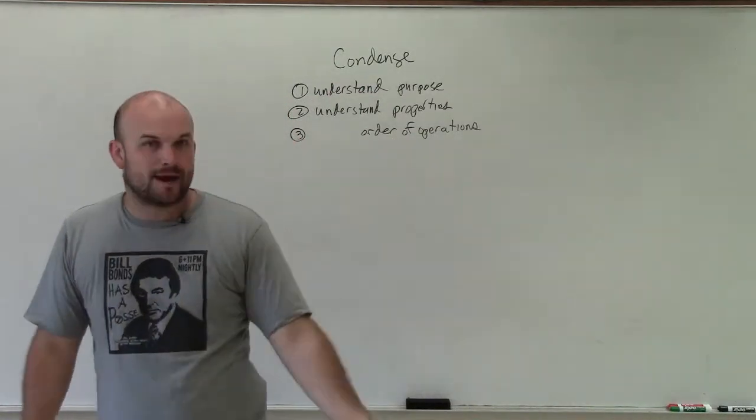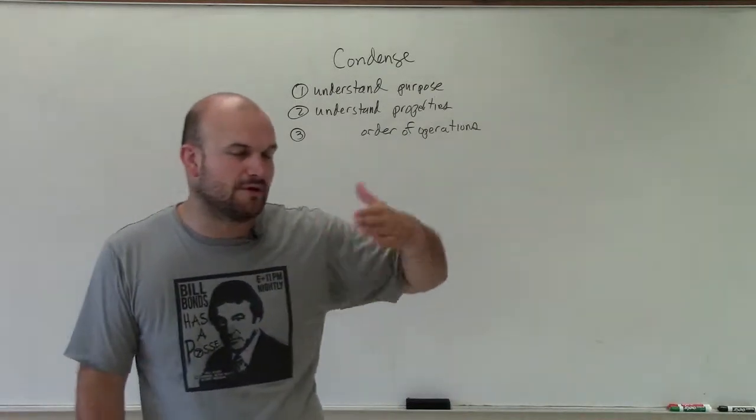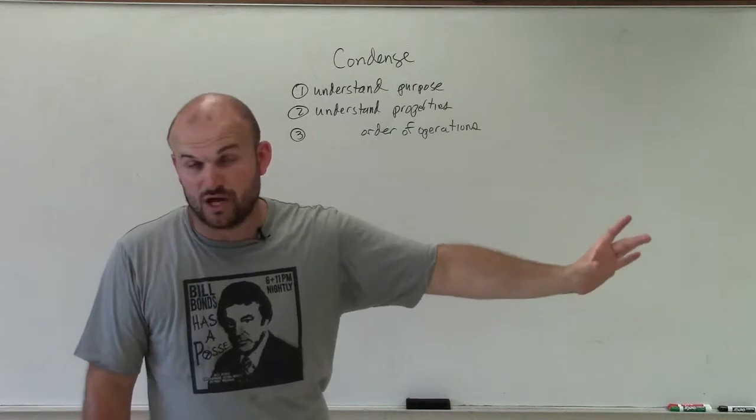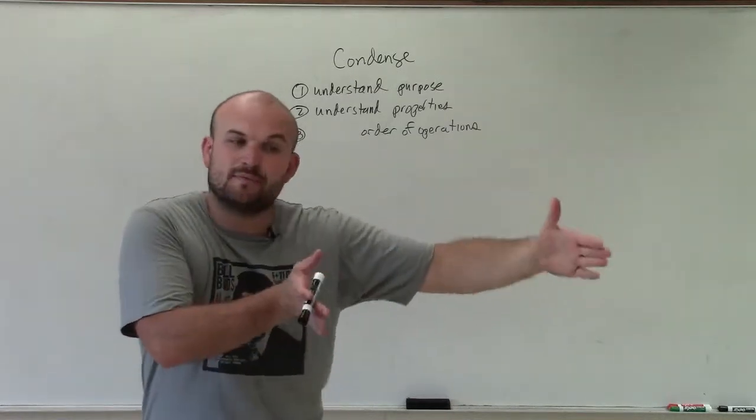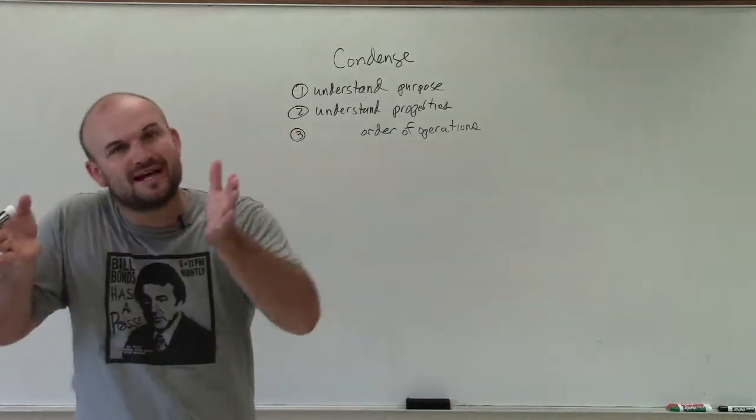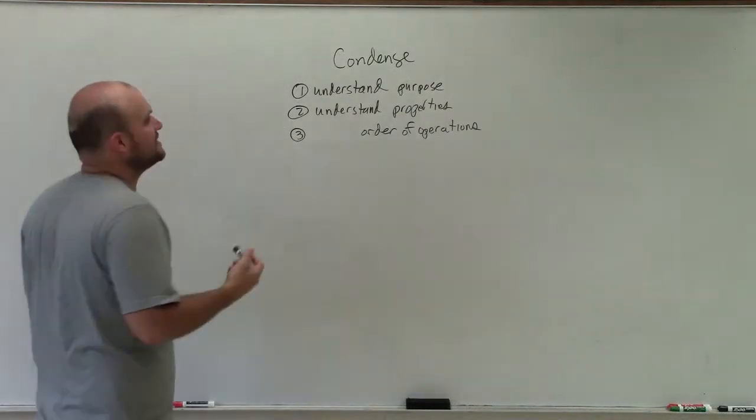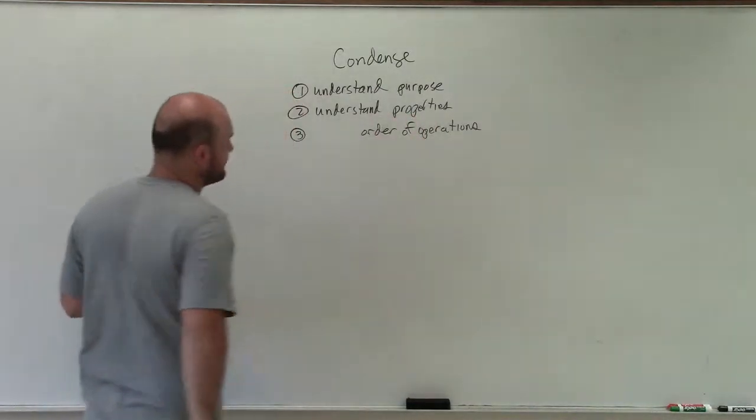So we have to understand the properties. Usually how we wrote them out is if you have the product, we can rewrite that as the sum of two logarithms. Well, now we're taking the sum of two logarithms and rewriting them as one single quantity as the product. So we have to understand the properties, how they go back and forth.